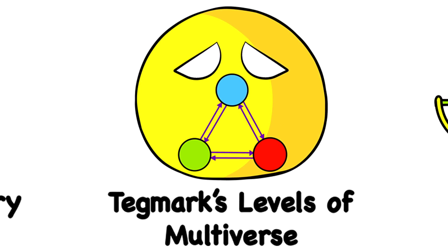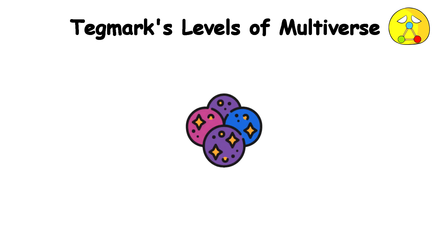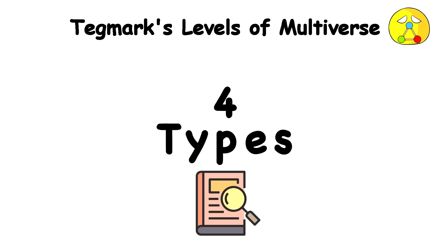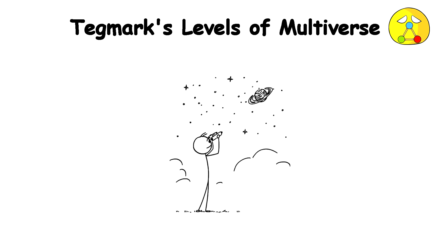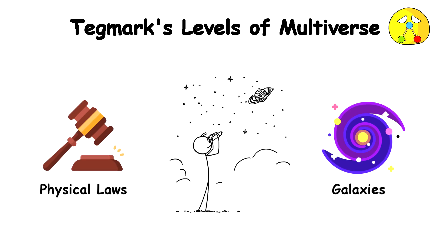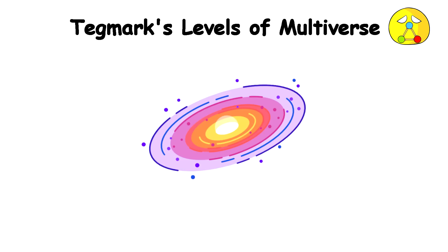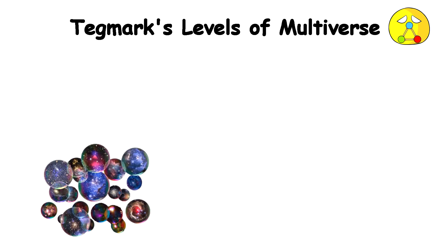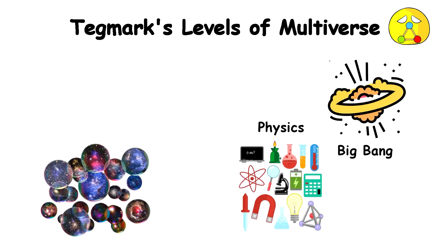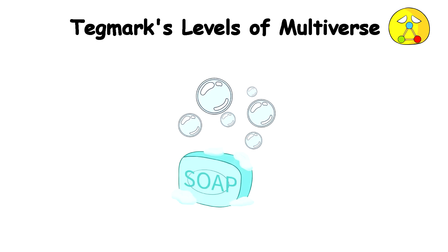Tegmark's Levels of Multiverse. Tegmark categorizes multiverses into four types ordered by increasing theory from our known physics. Level 1: It says our observable universe with its galaxies and physical laws is just a small part of a much vaster space. Beyond what we can see, there are likely other regions of space similar to ours with the same basic physics. Level 2: This suggests other bubble universes were spawned after the Big Bang, with different physics than our region. It's like expanding soap bubbles that form with slightly different laws.